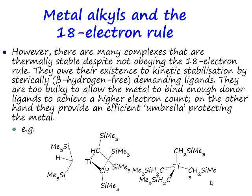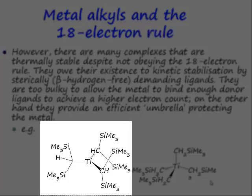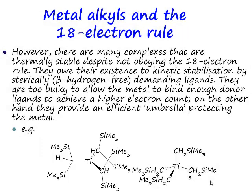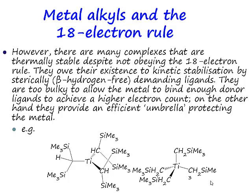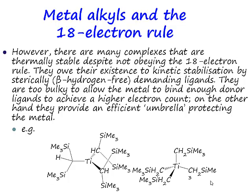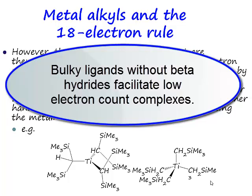Now if we want to produce something even more electron deficient, we need to use an even more sterically encumbered alkyl ligand. What's the electron count of the complex on the left? This is a seven-electron complex — that should be screaming at you. Seven electrons: not only is it spectacularly electron deficient, it's got an odd number of electrons. This species has got no right to be stable, and yet it is isolable because we've got these whacking great bis-trimethylsilylmethyl ligands producing a steric umbrella and stabilising the complex. Incidentally, neither of these ligands have beta hydrogens — beta hydrogens are still very much a no-no in these systems. If you use a bulky enough ligand without beta hydrides, you can produce these very electron-deficient metal alkyl complexes.